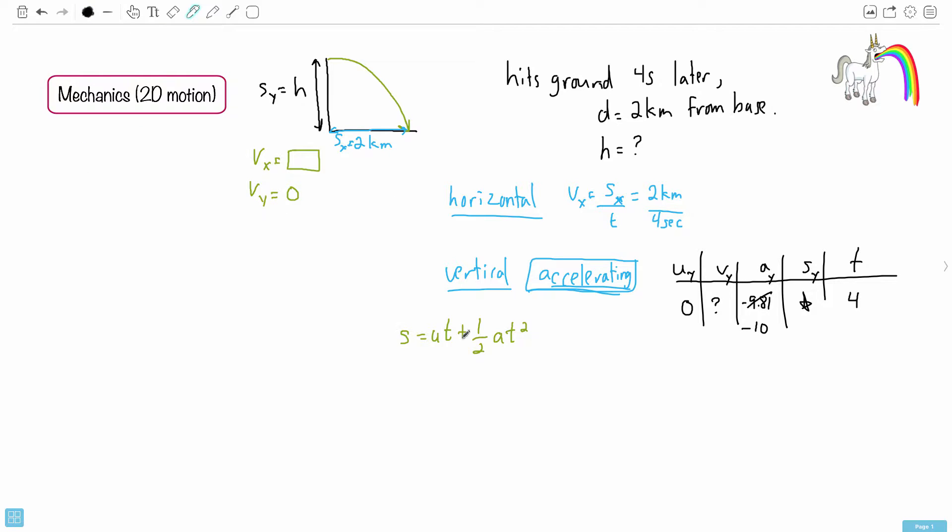So how do we actually do it? Well, we fill it in. So we know that Sy, that's the one we're looking for. It equals UT, but U is 0. So thankfully, that just cancelled out. So it equals 1 half times A, which is minus 10, times T squared. So that's 4 squared. That's not so bad, then. Take a look at this. Minus 10 over 2, what's that? That's minus 5. And 4 squared is 16. All right, so we need to do this. We need to do 4 squared times that. That we could have done.